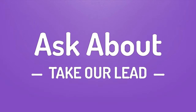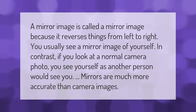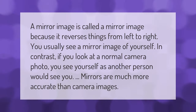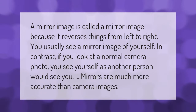A mirror image is called a mirror image because it reverses things from left to right. You usually see a mirror image of yourself. In contrast, if you look at a normal camera photo, you see yourself as another person would see you. Mirrors are much more accurate than camera images.